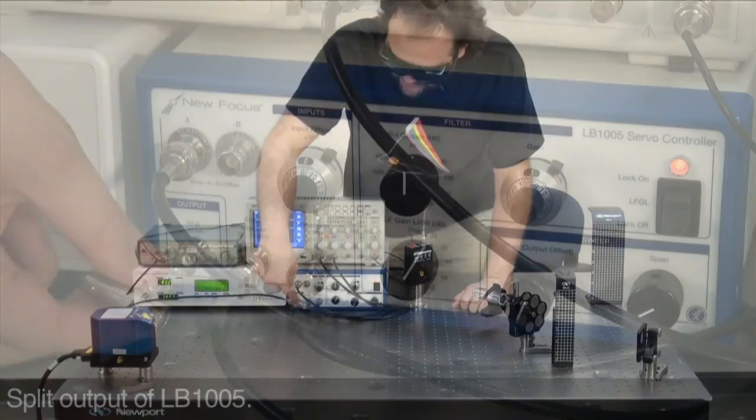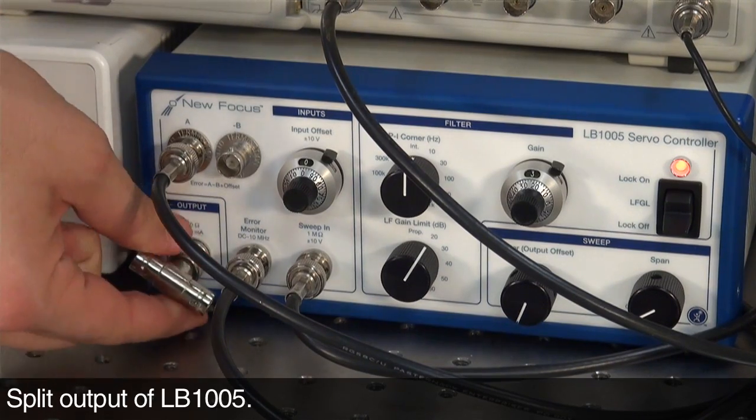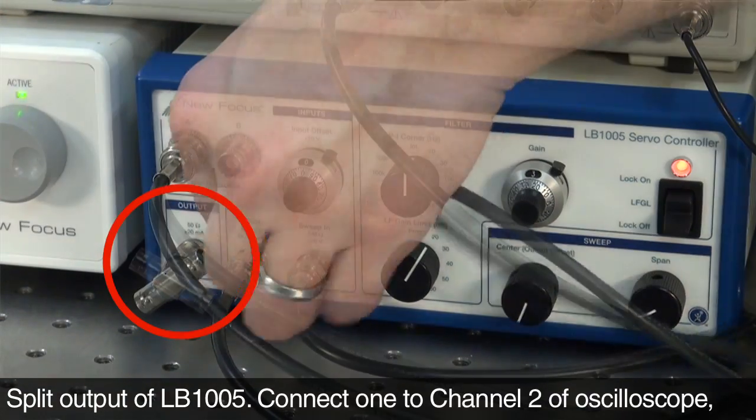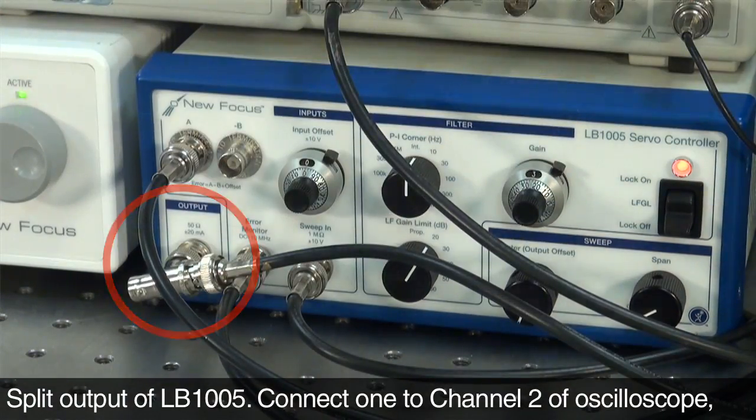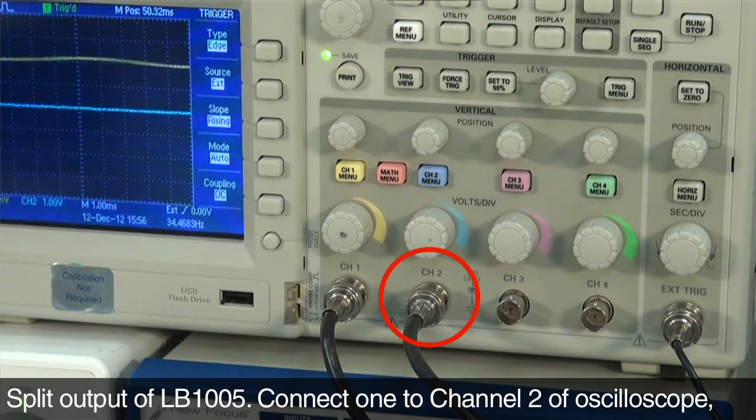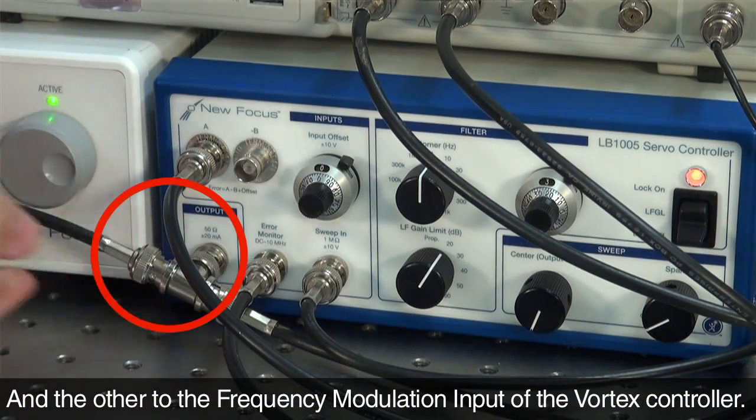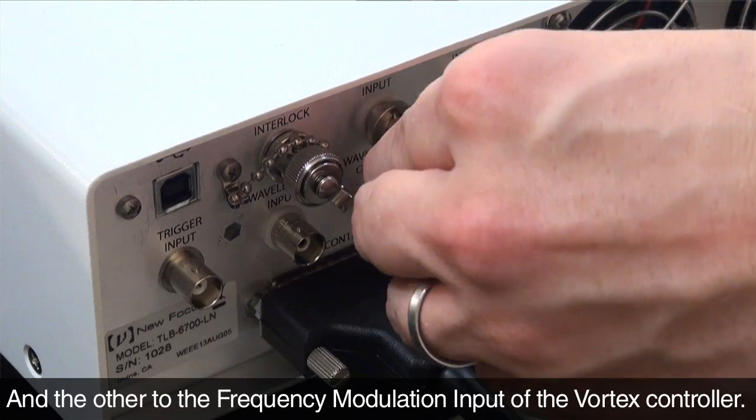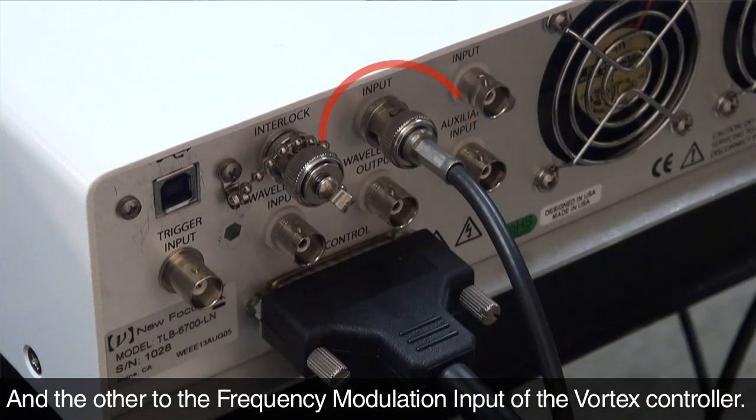Last, you will split the output of the lockbox with one channel going to channel 2 of the oscilloscope and the other going to the frequency modulation input of your Vortex-2 controller.